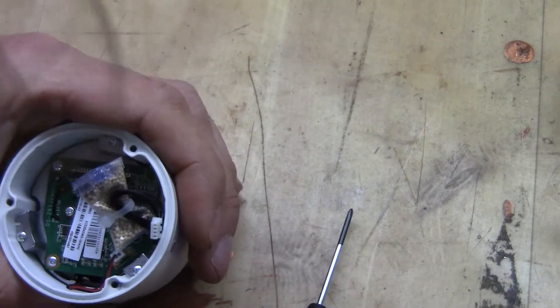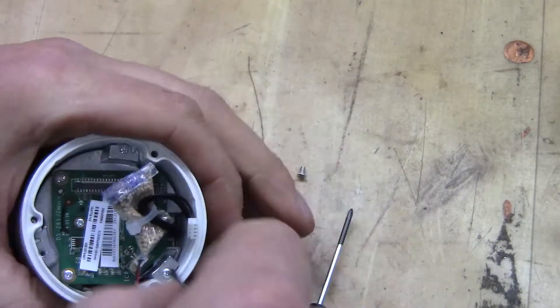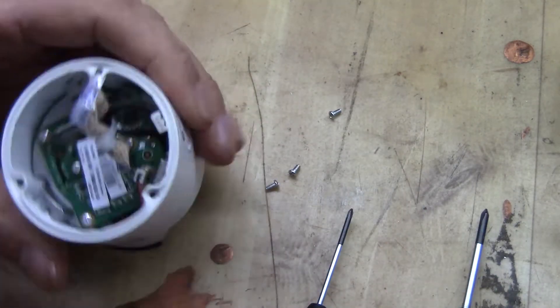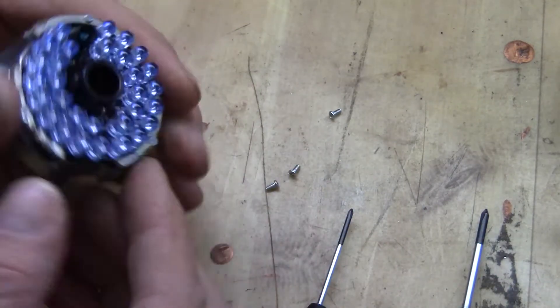Then it is actually time to get the board out that holds the actual camera and lens. So another couple of screws. Then I just quickly remove the IR filter.